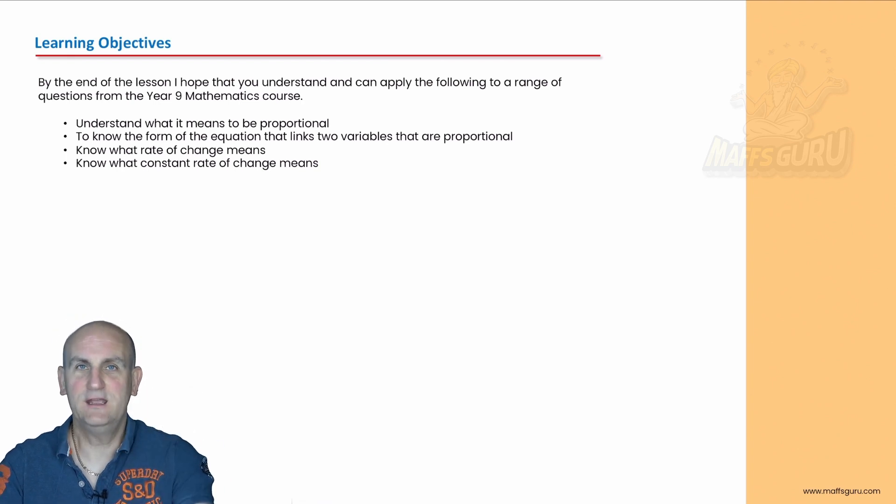So as you can see, our learning objectives above: understanding what proportional means, to know the form of an equation that links two variables, y equals mx plus c, and to know what the rate of change means. It's the gradient, but with units.